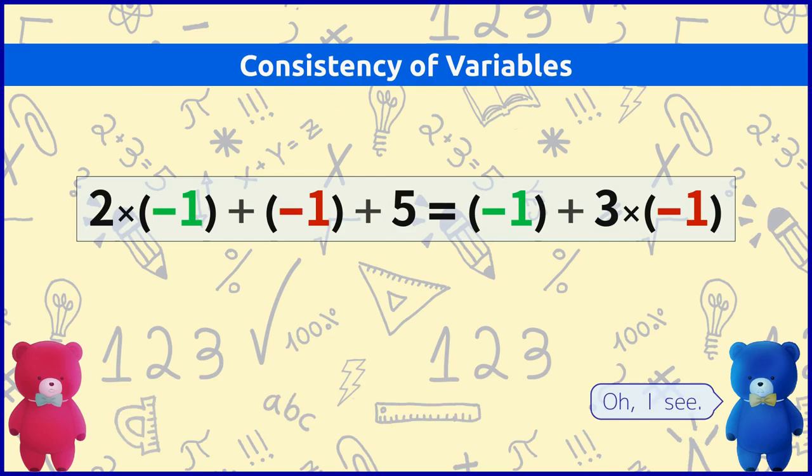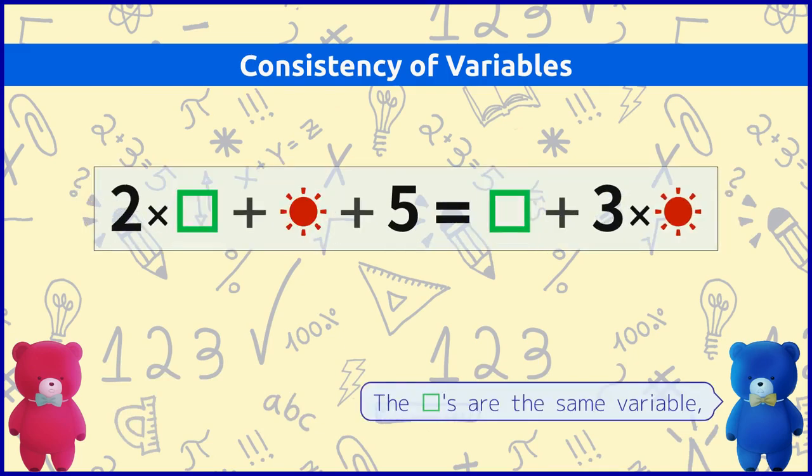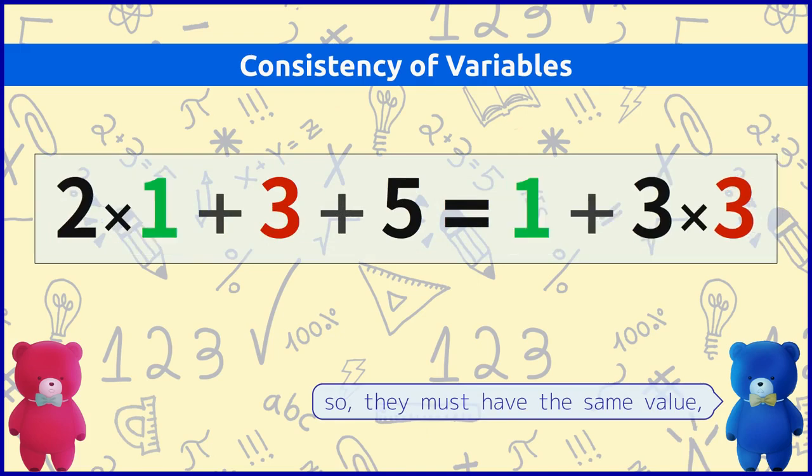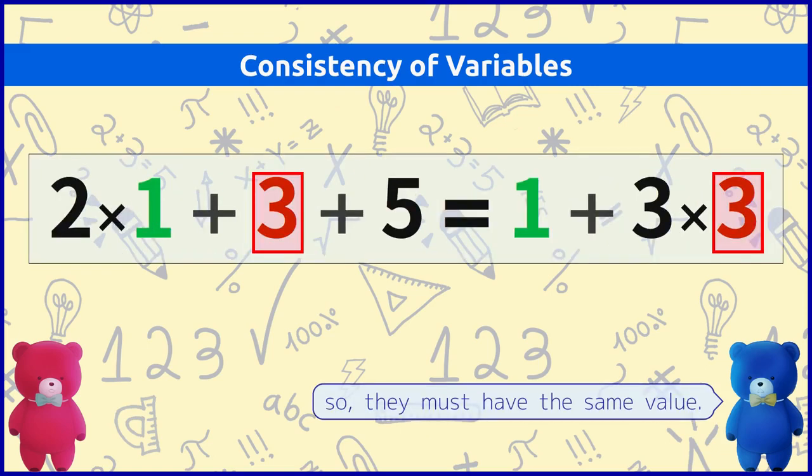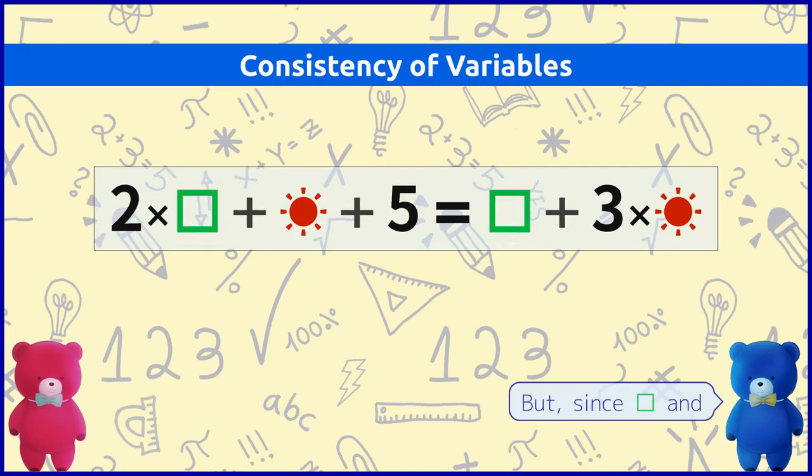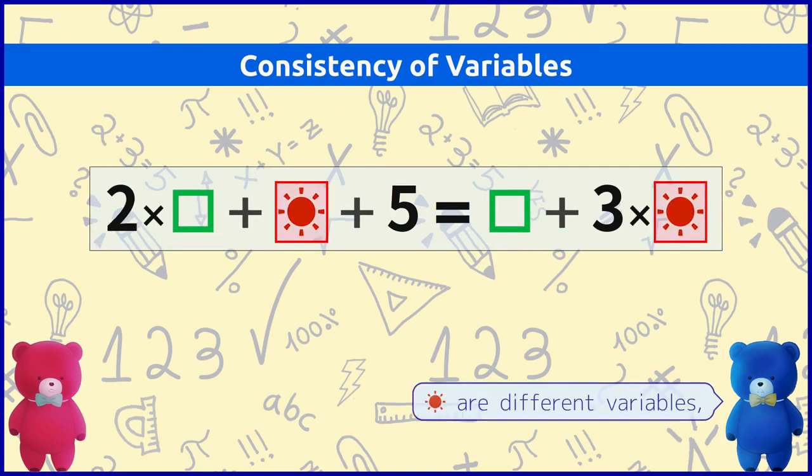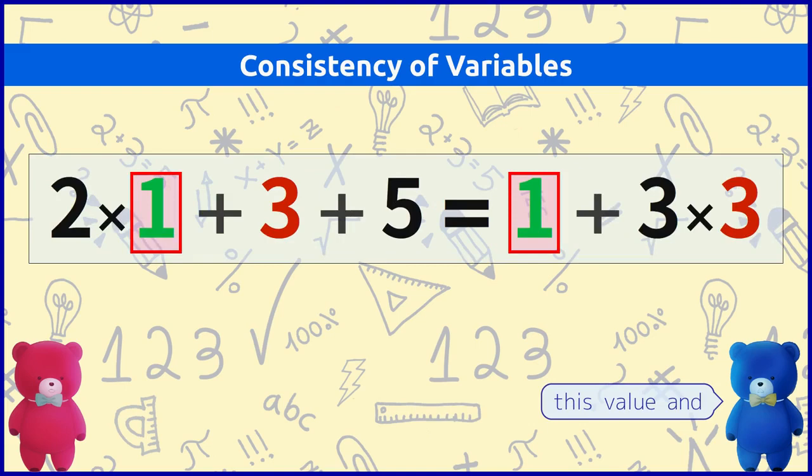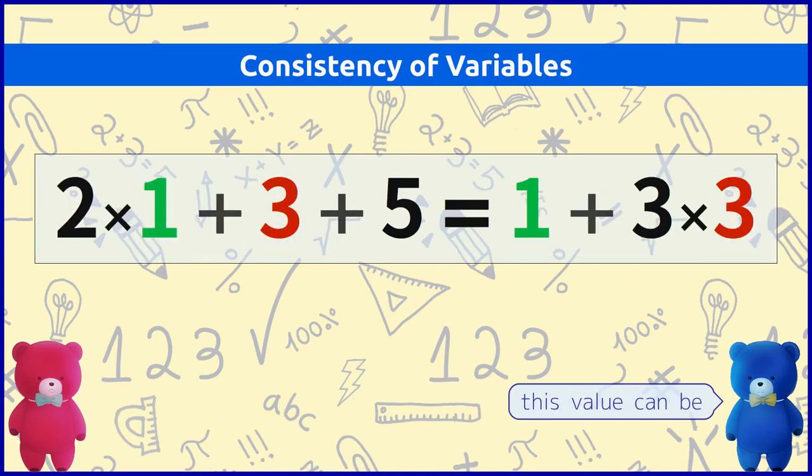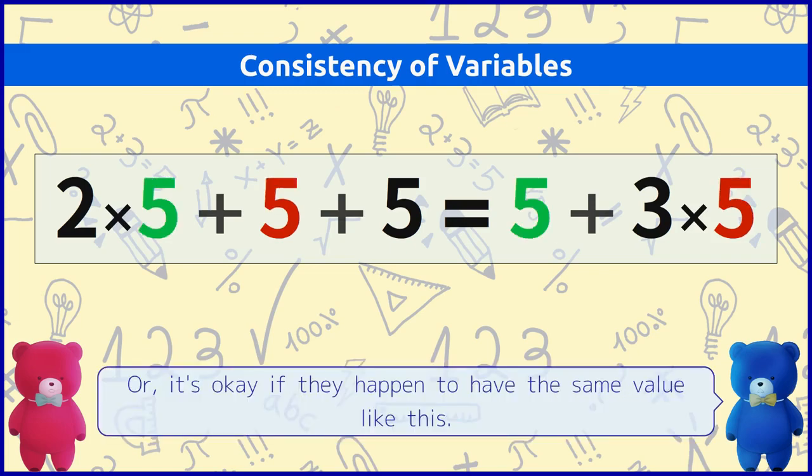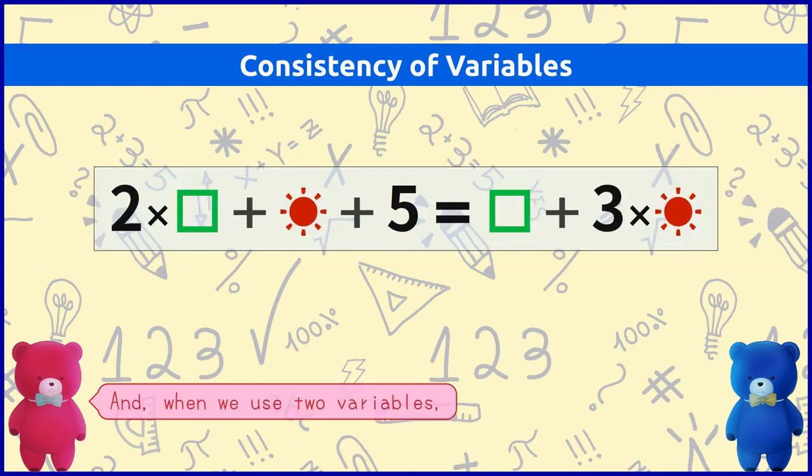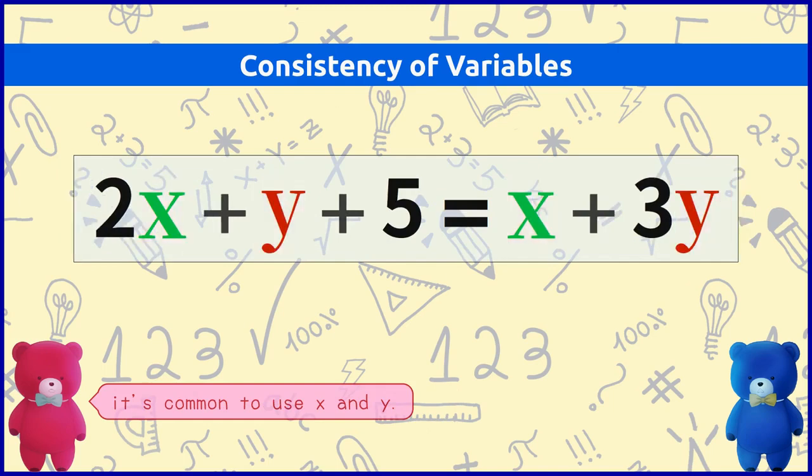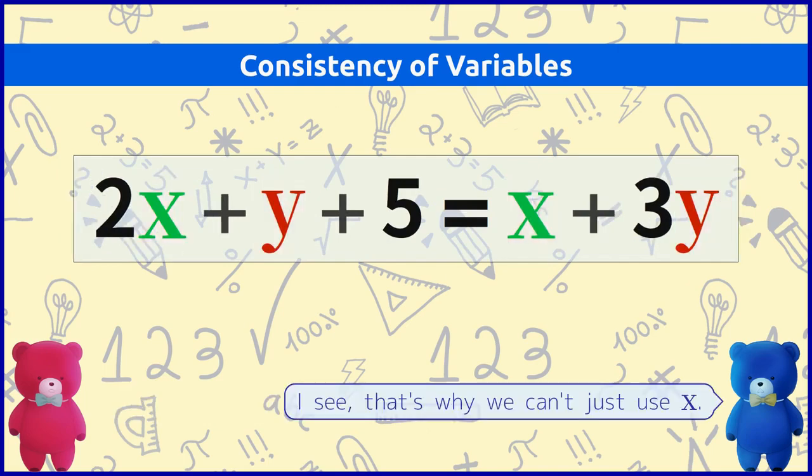Oh I see. The squares are the same variable, so they must have the same value. And the sunshines are the same variable, so they must have the same value. But square and sunshine are different variables. This value and this value can be different, or it's okay if they happen to have the same value like this. Yes exactly. And when we use two variables it's common to use x and y. I see that's why we can't just use x. Right.